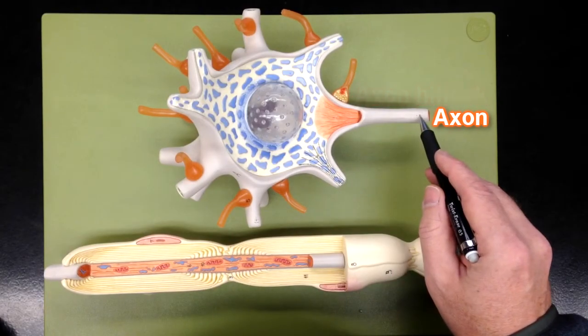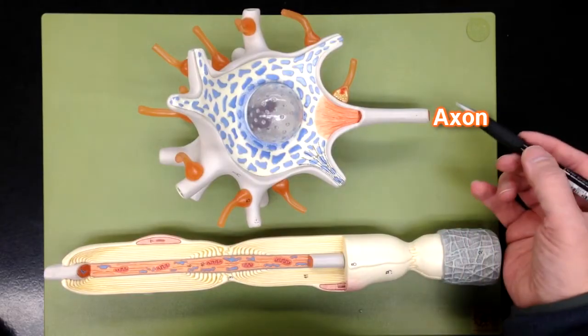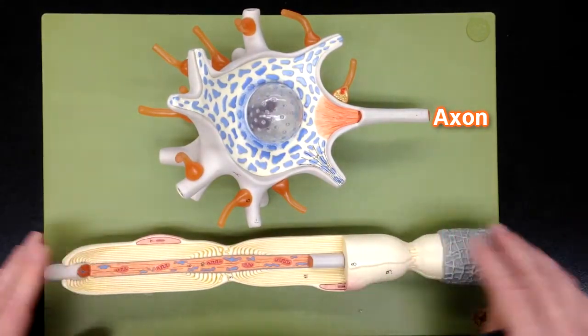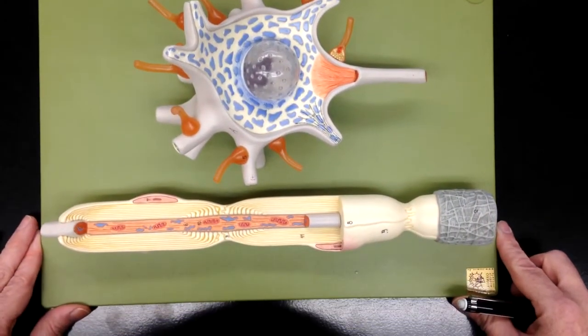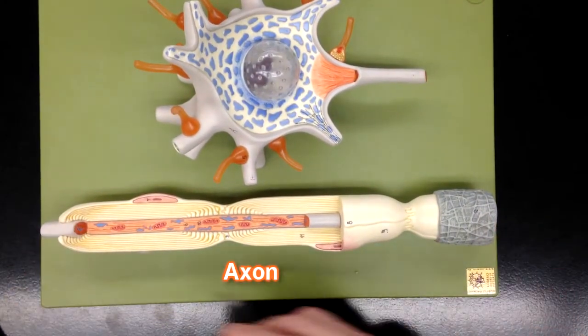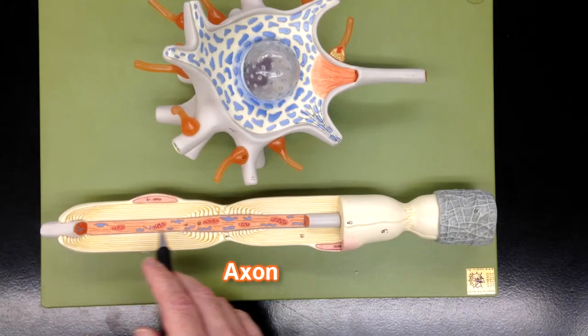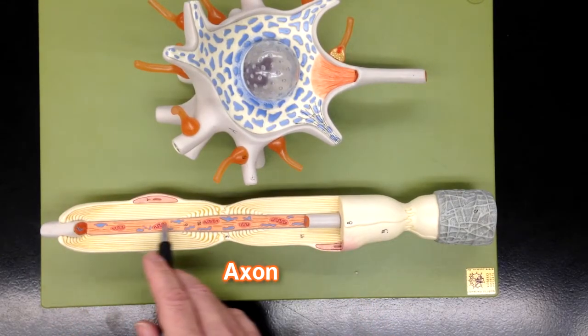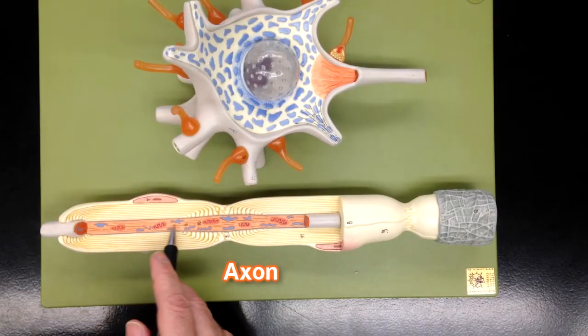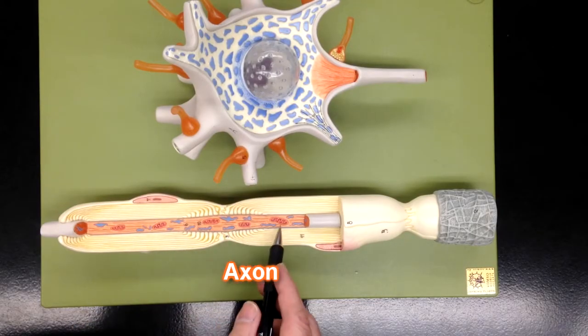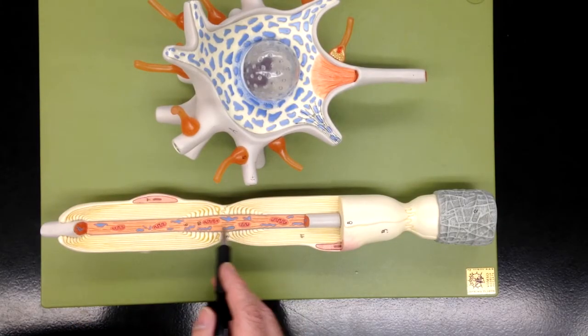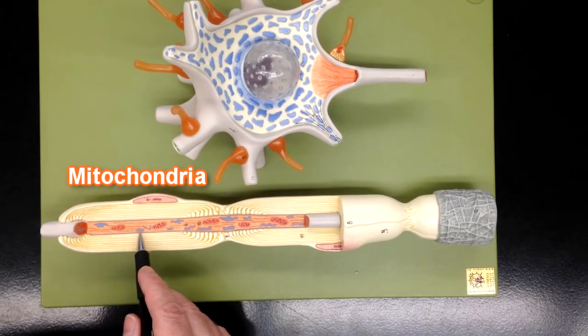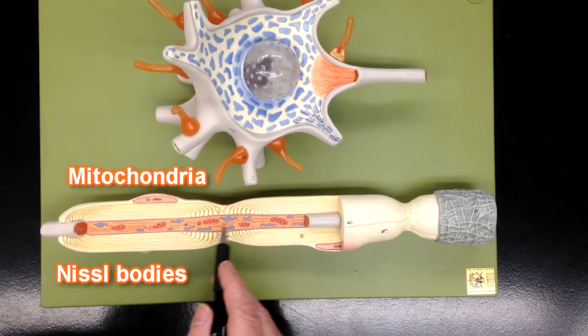This is the axon, and since this is a long cell, it's been cut so we can fit the rest of the axon down here. We've got the axon running through the center here, and we've cut it open so we can visualize structures on the inside, like these mitochondria and these Nissel bodies.